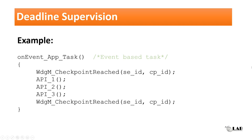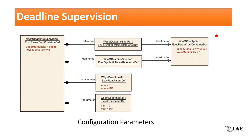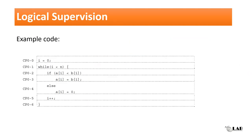In this example we can see two instances of calls to the WdgM_CheckpointReached API. It is required to inform the Watchdog Manager about the start and end of execution for a particular supervised entity. The timestamps will be saved during this operation by the Watchdog Manager and evaluated at the watchdog manager main function cycle. The configuration parameters for deadline supervision include a reference to the start checkpoint, a reference to the stop checkpoint, the minimum time, and the maximum time for the deadline.